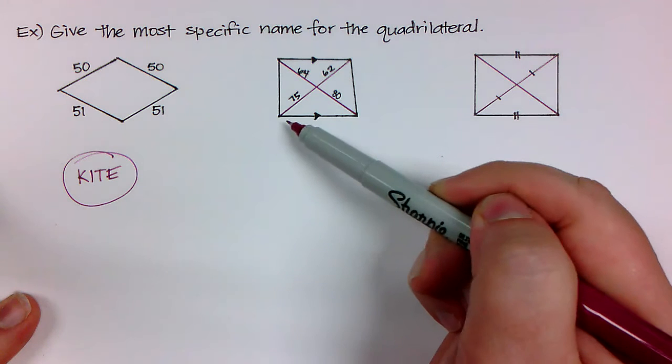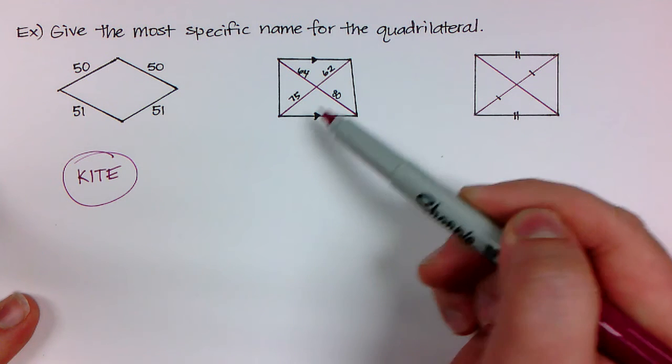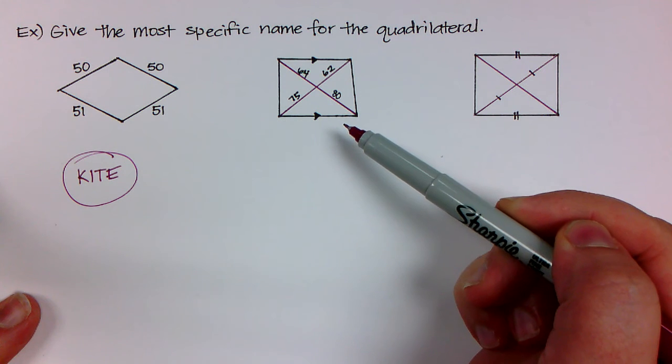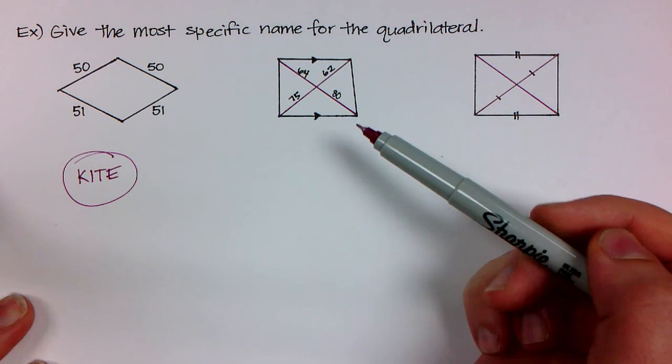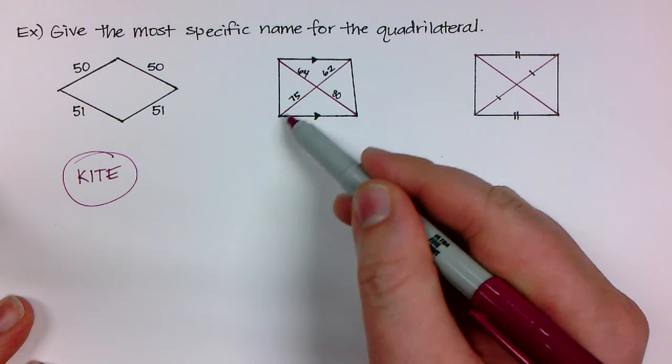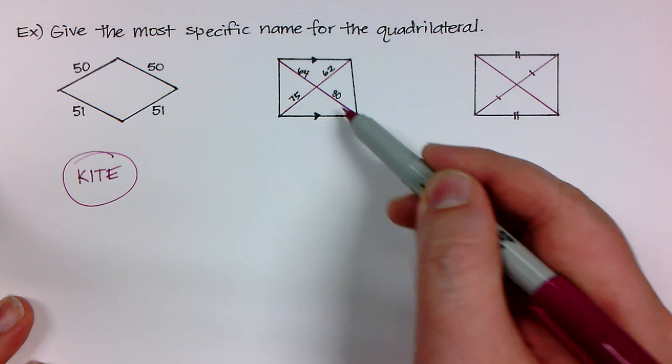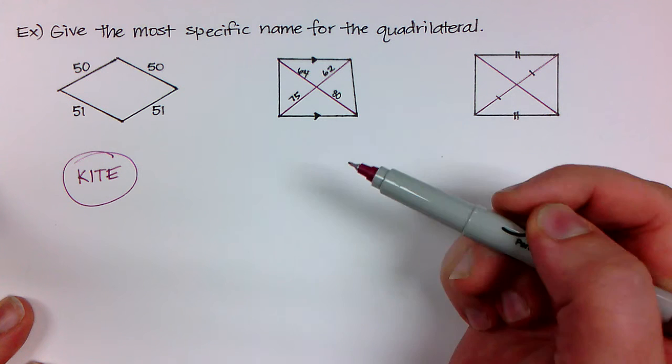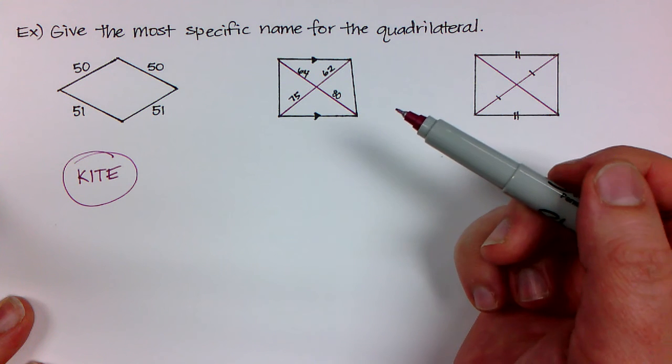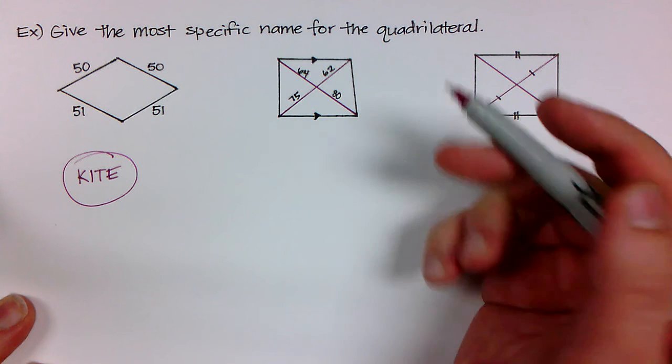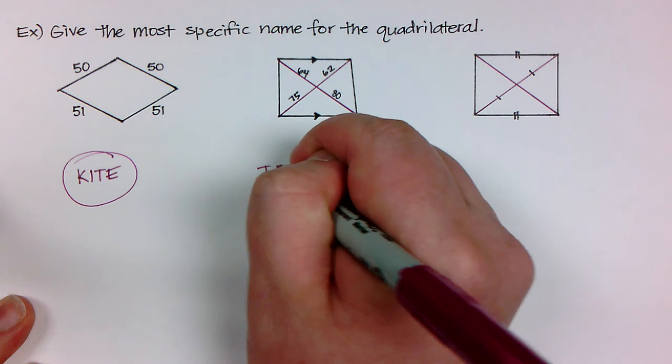For the second one, I'm just shown that the top and the bottom are both parallel. So that's kind of good. And also I'm told that these diagonals I have some measurements for and none of them are the same at all. So what this is going to be is it's just going to be a regular trapezoid.